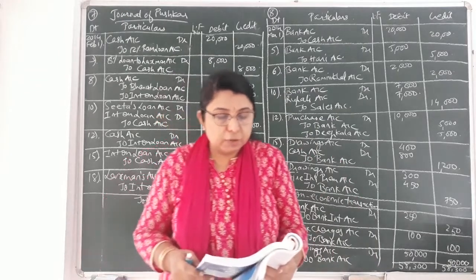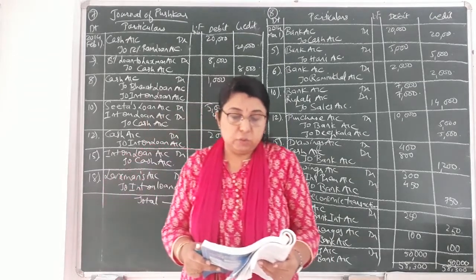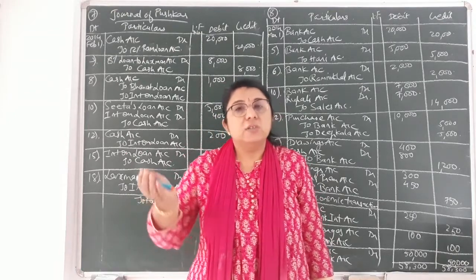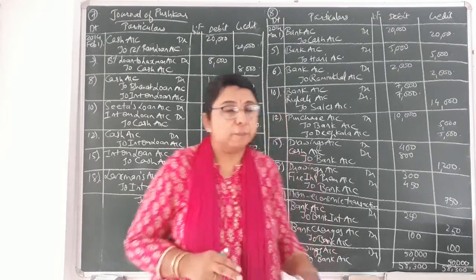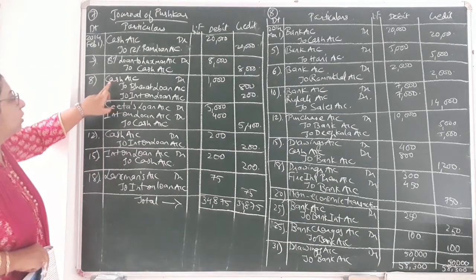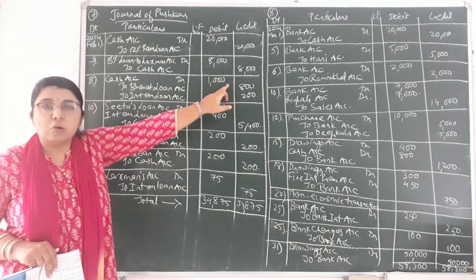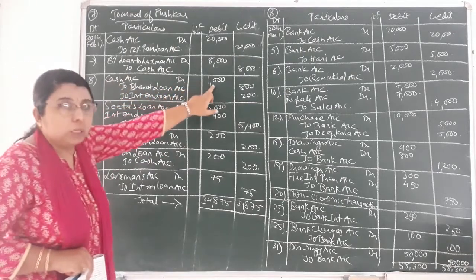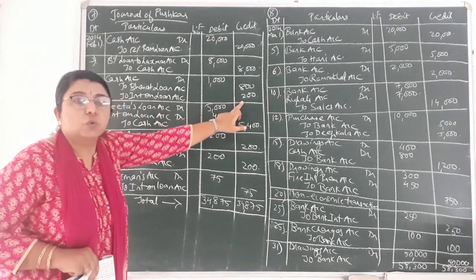Next, 8th date: received cash Rs. 800 for loan lent to Bharat and Rs. 200 for interest. Bharat is returning Rs. 800 of the loan and Rs. 200 interest to the business. So cash will be received. The entry: cash account debit 1,000 — because 800 plus 200 — to Bharat's loan account credit 800, to interest on loan account credit Rs. 200.